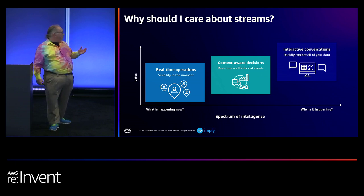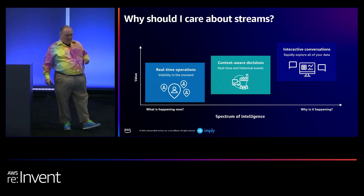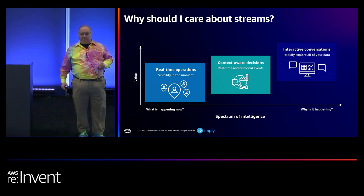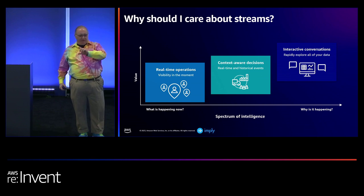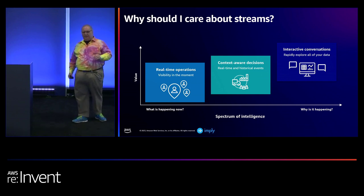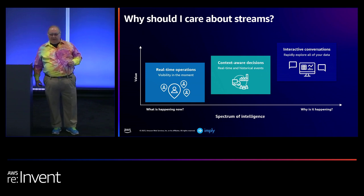Why do you care about streams? Well, you're here at re:Invent, so you probably know what a stream is and why you'd care. One key use is real-time operations — understanding what's happening in the moment. With Druid, I have true stream ingestion, which means every event goes into that database and can be queried as soon as it enters the stream — Kinesis, Kafka, or whatever you're using. In real life, that's usually about 10 to 20 milliseconds between the event happening and having it ready for query.